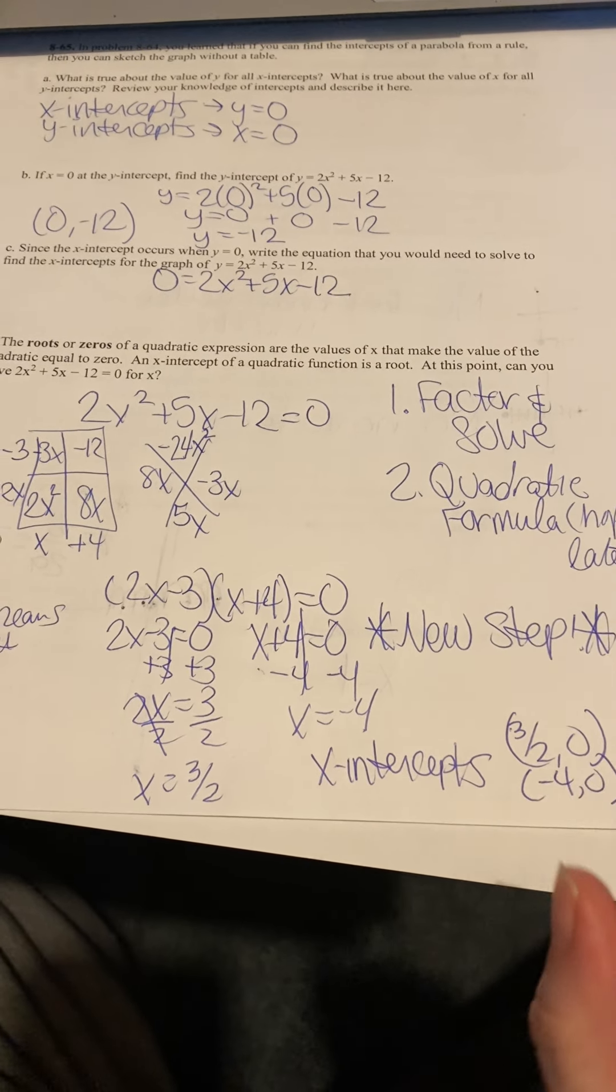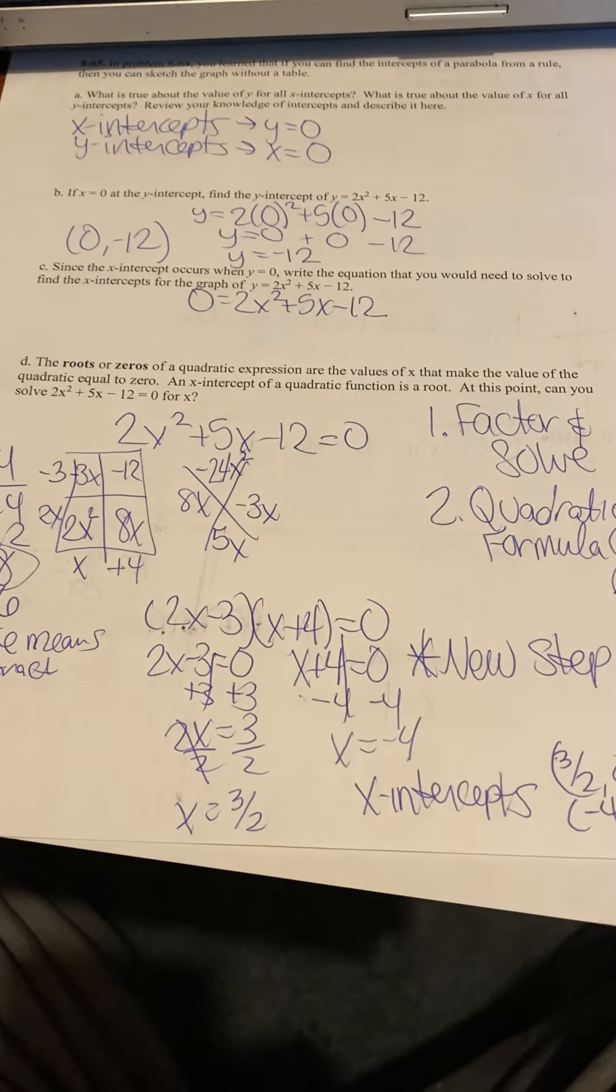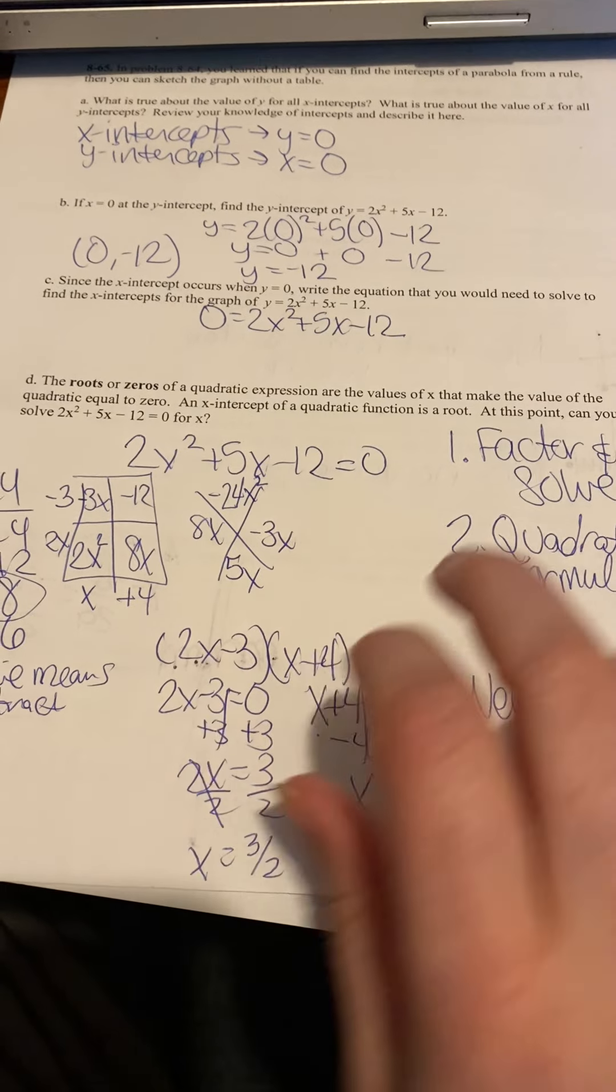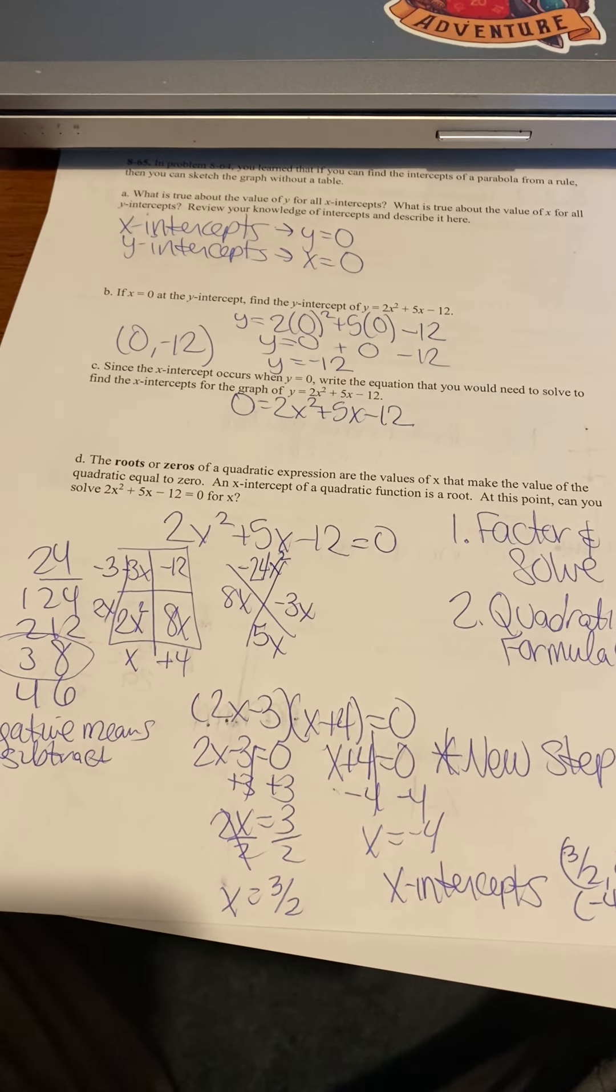So your x-intercepts would be 3 over 2, 0, and negative 4, 0. This is a new step right here. Splitting them and making them each equal to 0. This is the new part of today's lesson. Tune in next for video number 3.